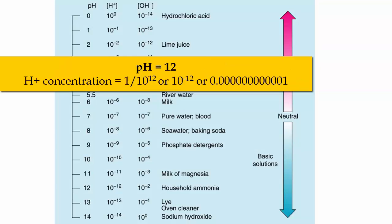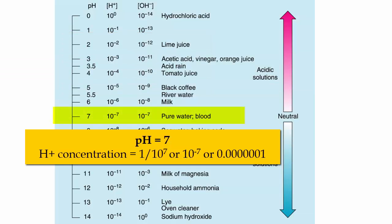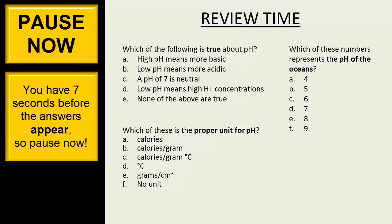Here is a list of common substances and their associated pH and H+ and OH- concentrations. Notice that pure water and blood have a pH of 7 with equal H+ and OH-, and thus are considered neutral. But again, notice what that concentration really is: H+ has a concentration of 1 over 10 to the 7th, or 1 over 10 millionth.